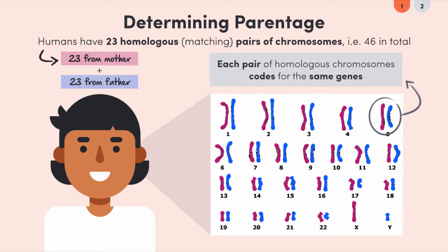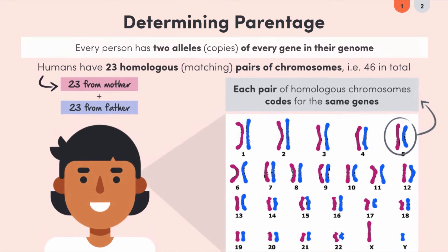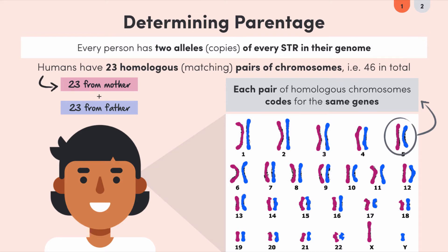Importantly, each pair of homologous chromosomes codes for the same genes. What this means is that every person has two alleles, or copies, of every gene in their genome — except for some on the sex chromosomes, but that's not the point right now. The point is that every person has two copies of each STR, one from each parent.